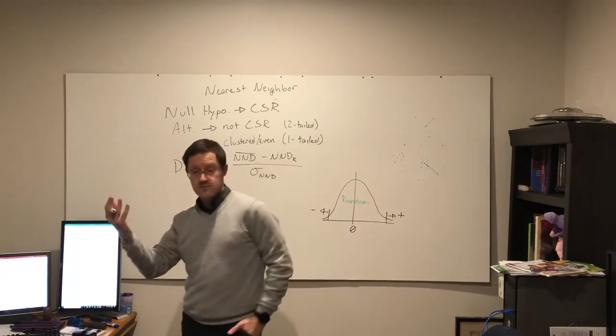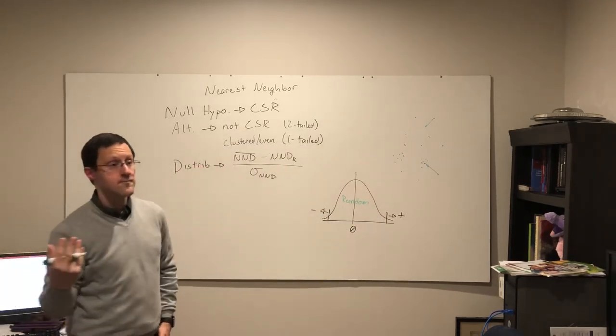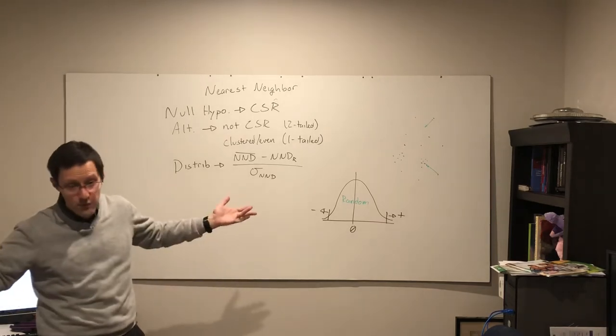So if it's close to zero, it's random. If I do a two-tail test, I can just say it's not random.